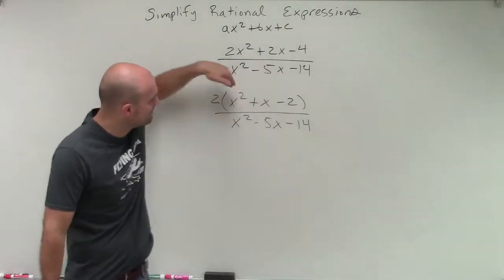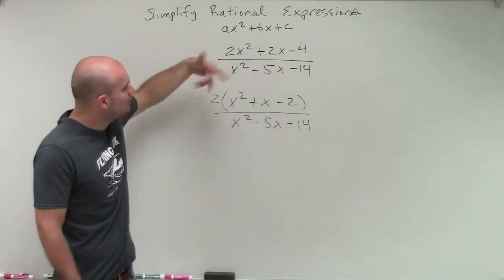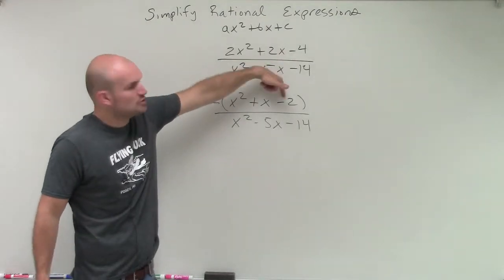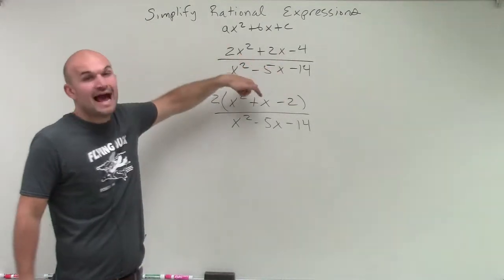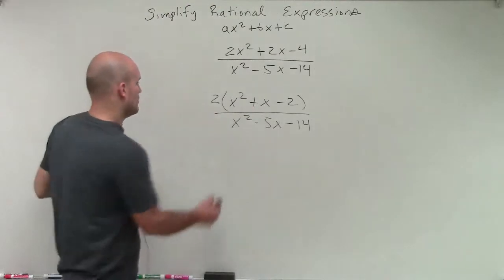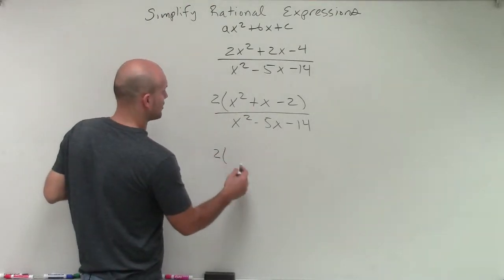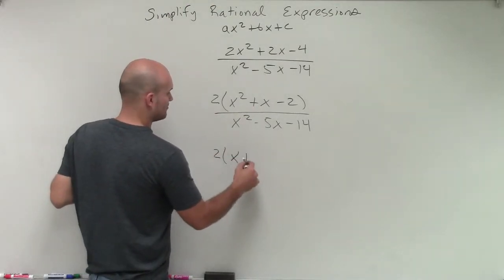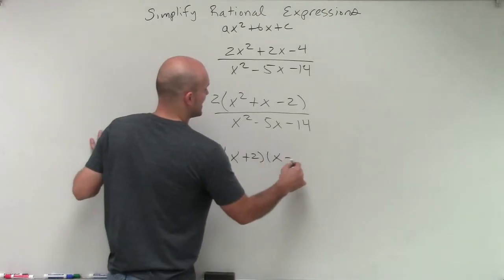But remember, when looking at factoring this inside this box, we want to say, what two values multiply to give me negative 2, but then add to give me a negative 1. Well, I can rewrite that in factored form as x plus 2 times x minus 1.